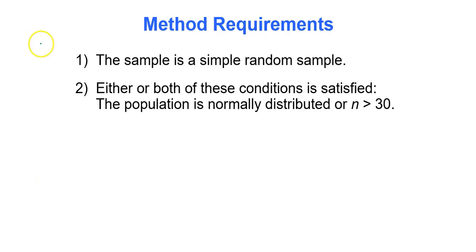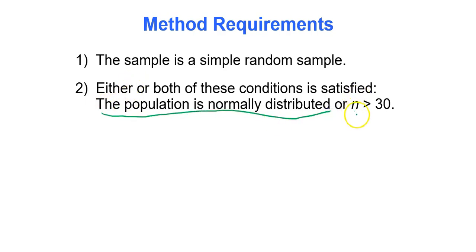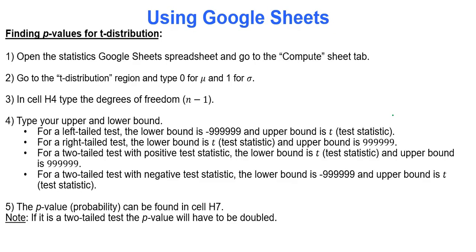To use this method, the sample has to be a simple random sample and either the population is normally distributed, meaning bell-shaped, or the sample size is greater than 30. We're going to practice using the compute tab and the t-distribution region of Google Sheets to find p-values.